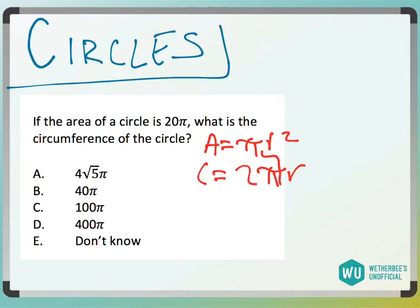They're both based off of r, so if I have one, I can back myself into the other one. So I have area is πr² which is 20π, so I'm just going to solve for this r.